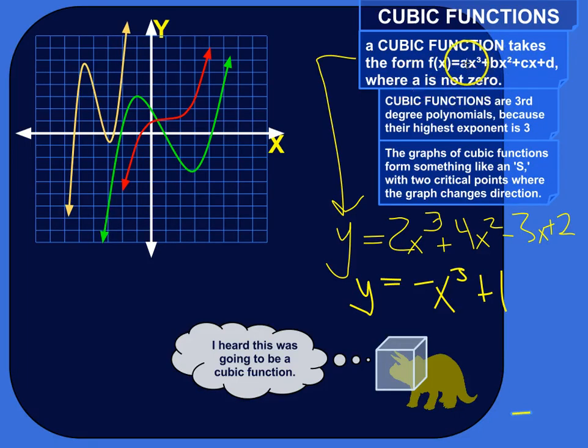And all that's really saying, where a is not zero, is that as long as you've got some term in there that is something x cubed and there's no exponents that are higher than 3, you don't have 5x to the 4th or something like that.